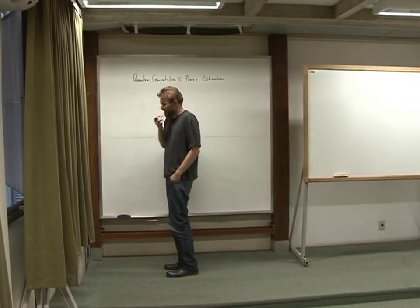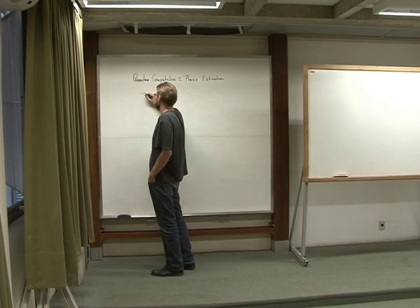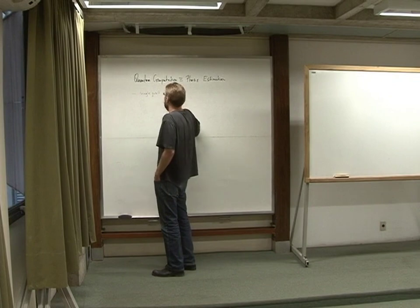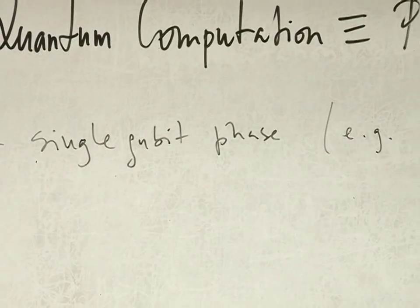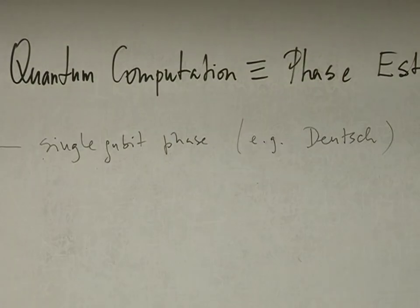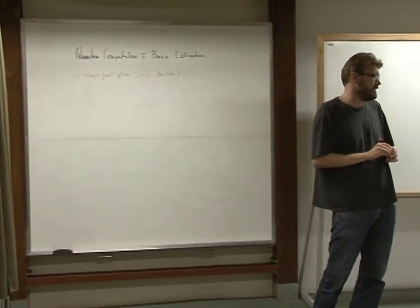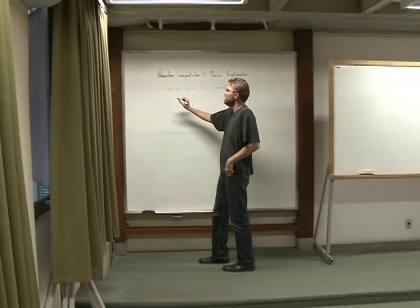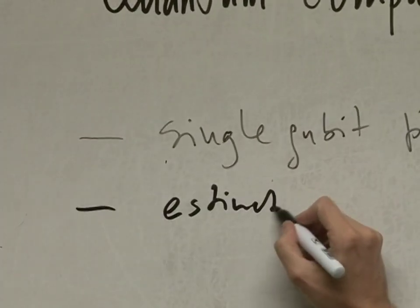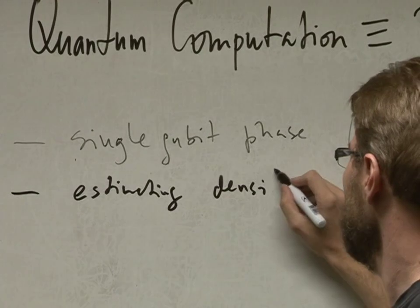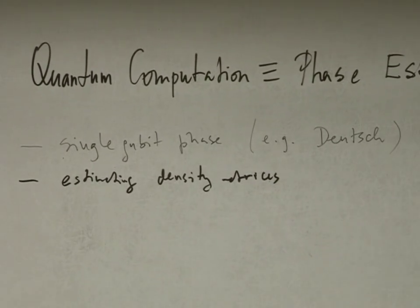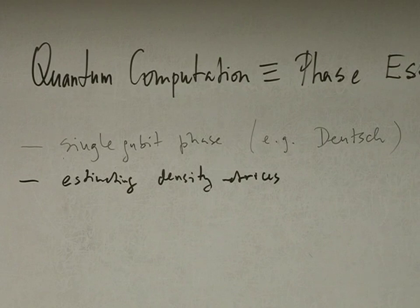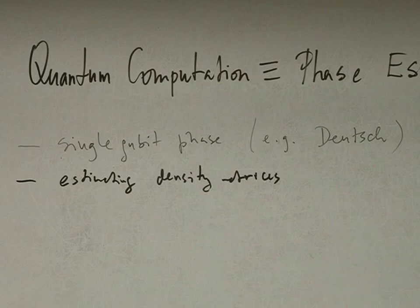We start with a single qubit phase. A special case we already saw was Deutsch's algorithm — here the phase is very simple, it's really just zero or pi. If you want a more general phase, you can phrase it in this way as well. The second example extends this to estimating density matrices, which requires estimating the spectrum — the eigenvalues and eigenvectors. So why is that a phase estimation?